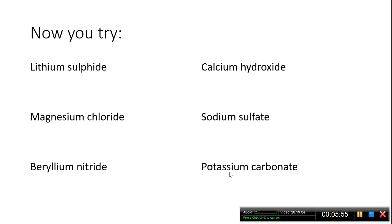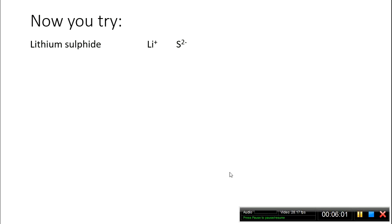Now you try these. Pause the video here. Lithium sulfide is made up of lithium 1+ and a sulfide ion with a 2- charge. For those to balance out, I need a 2+ charge on my lithium, so I multiply lithium by 2 and sulfide by 1. Overall, I get Li2S.